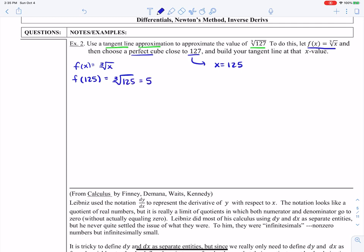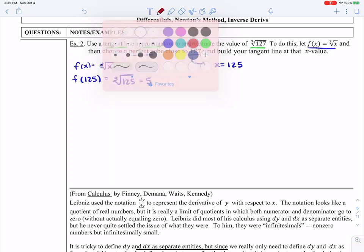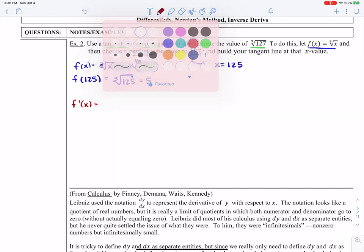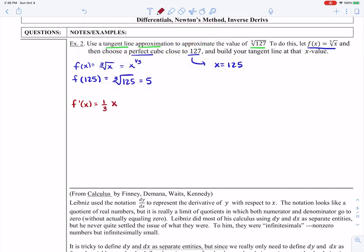So I would expect that the real value is slightly larger than 5. So what we're going to do is we're going to take the derivative of this function. Keeping in mind that this function is really x to the one third power, we're going to take the derivative using our power rule. So we'll say one third x to the negative two thirds power, which we'll rewrite to be one over three x to the two thirds power. And we're now going to also plug in 125 into this function. Not 127, 125, because we're building the tangent line at 125.